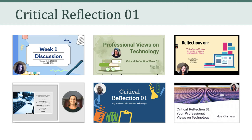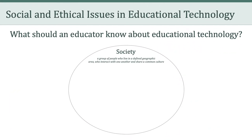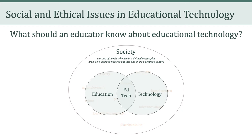That's all for now. We'll talk more about the Professional Views on Technology Questionnaire toward the end of the video. When we left off last week, we were talking about what an educator should know about educational technology. To help frame that discussion, we talked about society as a group of people who live in a defined geographic area and who interact with one another and share a common culture. We also talked about a number of social ills or social problems, such as poverty, privacy, inequality, and discrimination.